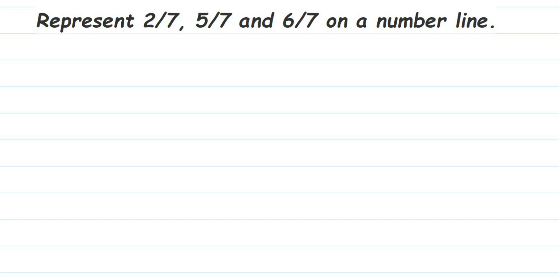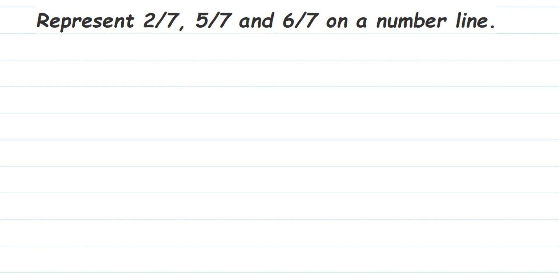Here's a question on fractions: represent 2/7, 5/7, and 6/7 on a number line. If you look at these numbers, they all have the same denominator. All these given fractions are proper fractions. A proper fraction is when the numerator is less than the denominator. Here, 2/7 — 2 is smaller than 7; 5/7 — 5 is less than 7; and 6/7 — 6 is also less than 7. So all these given fractions are proper fractions.